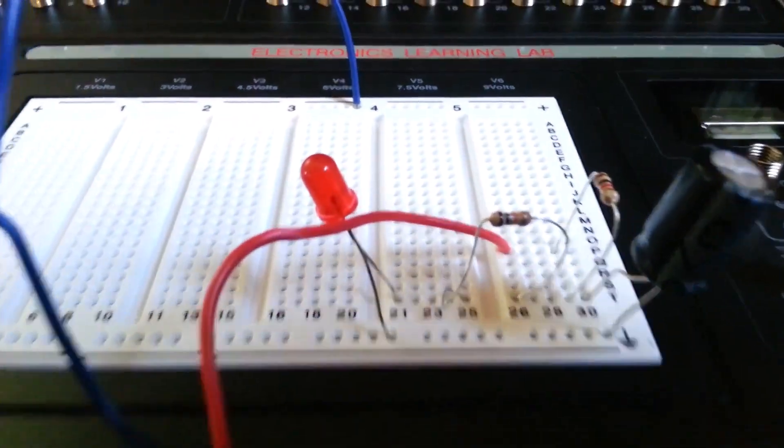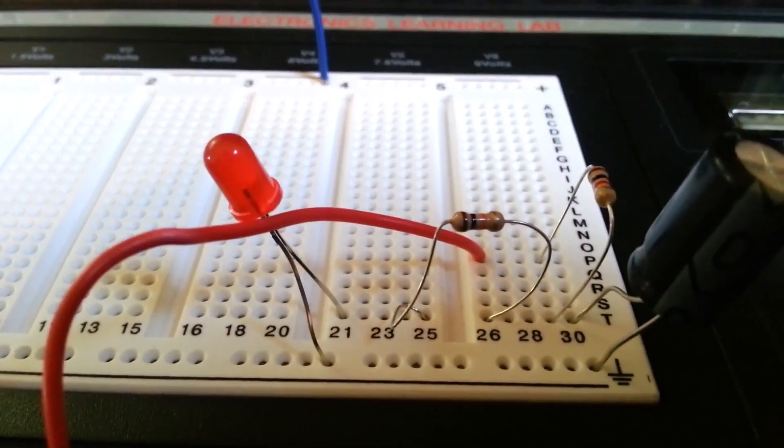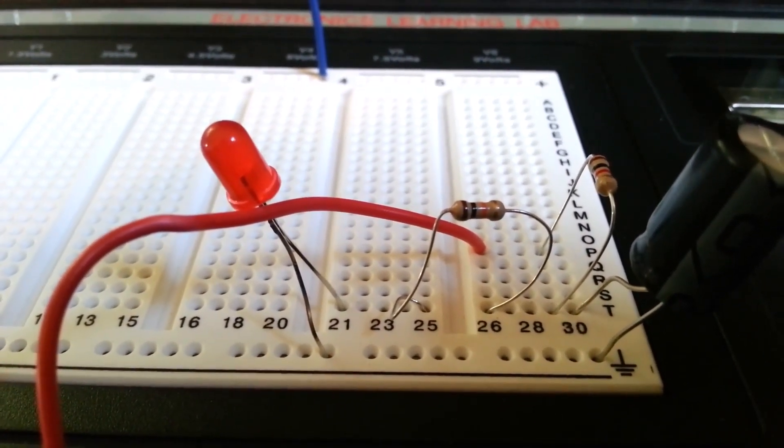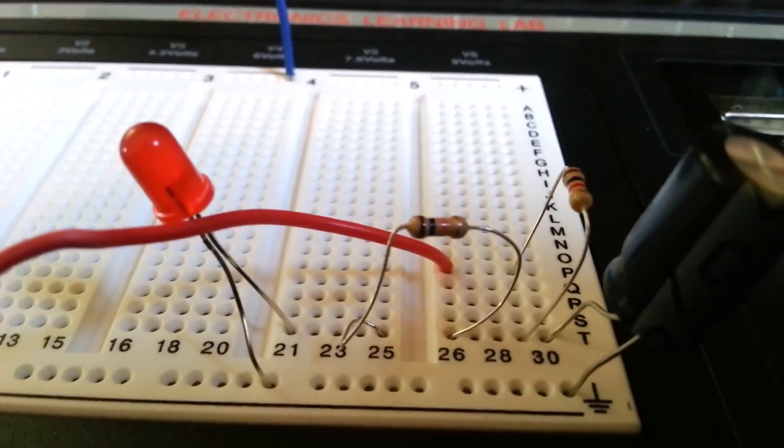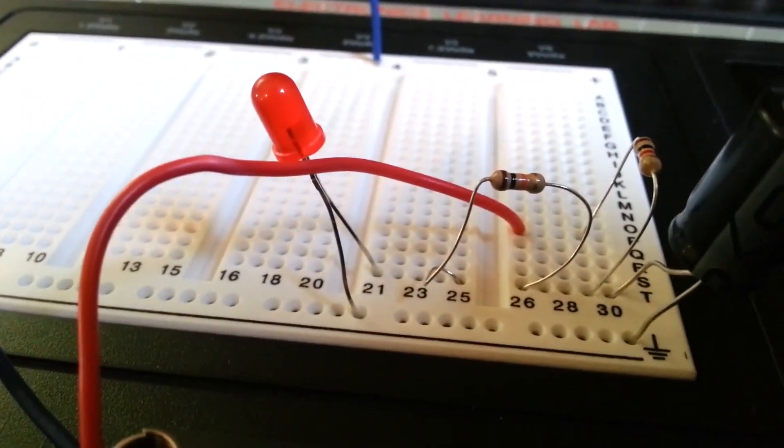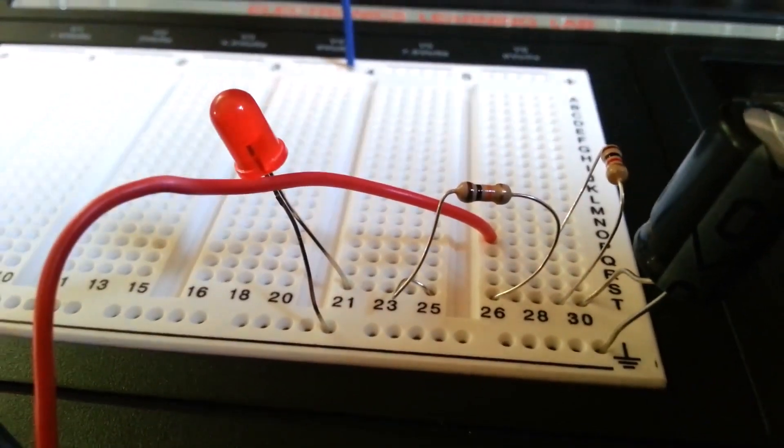Oh yeah. It looks beautiful. Okay. So yeah, that's a brown, black, red - oh no, I'm sorry - brown, black, orange resistor. And that's 10,000 ohms. This one right here.